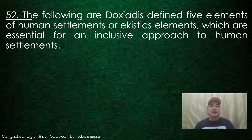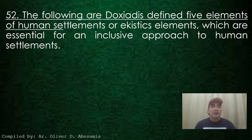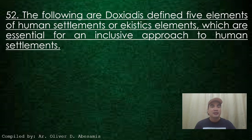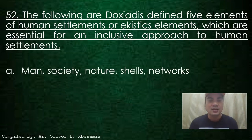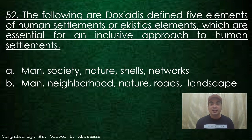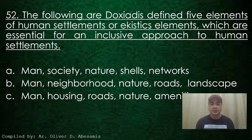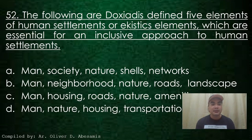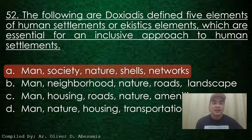Next. The following are Doxiadis' defined five elements of human settlements, or Ekistics elements, which are essential for an inclusive approach to human settlements. A. Man, society, nature, shells, network. B. Man, neighborhood, nature, roads, landscape. C. Man, housing, roads, nature, amenities. D. Man, nature, housing, transportation, and nature. Answer: A. Man, society, nature, shells, and networks.